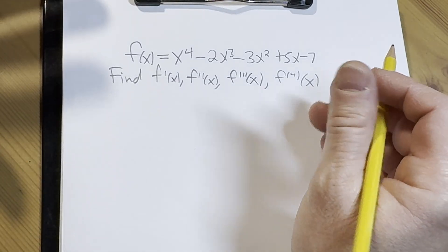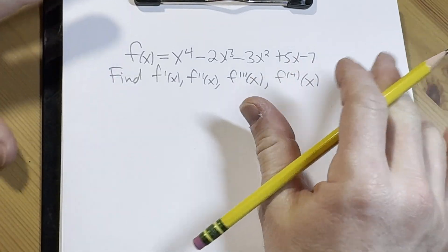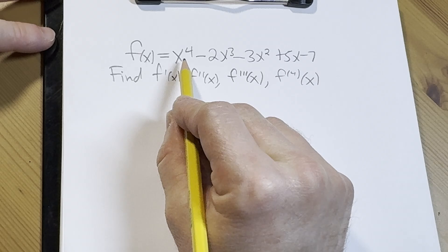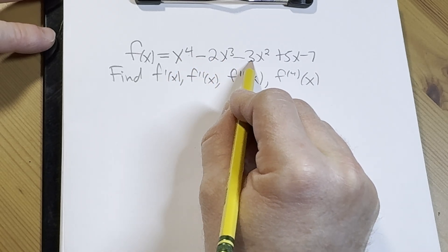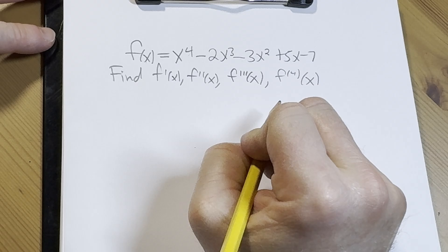Hi, in this video we're going to do an example of finding multiple derivatives. So our function is f(x) = x^4 - 2x^3 - 3x^2 + 5x - 7.